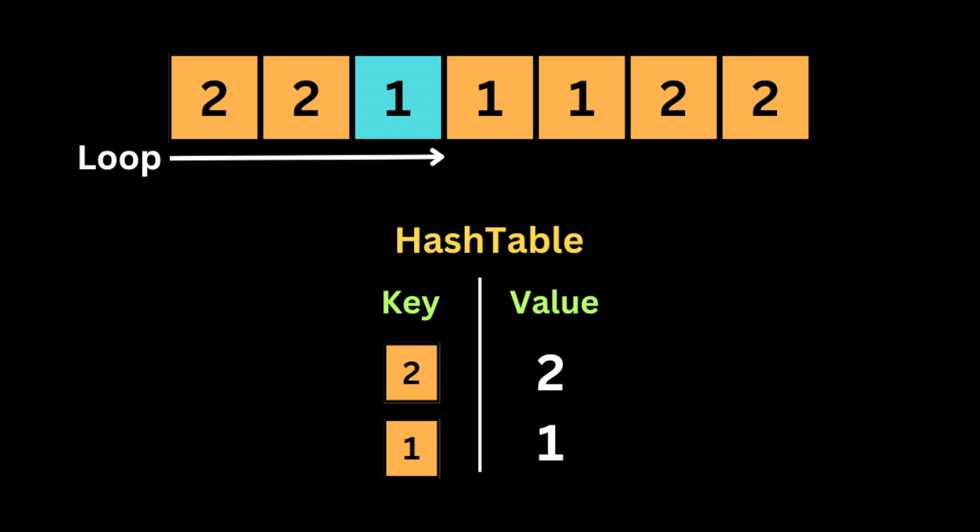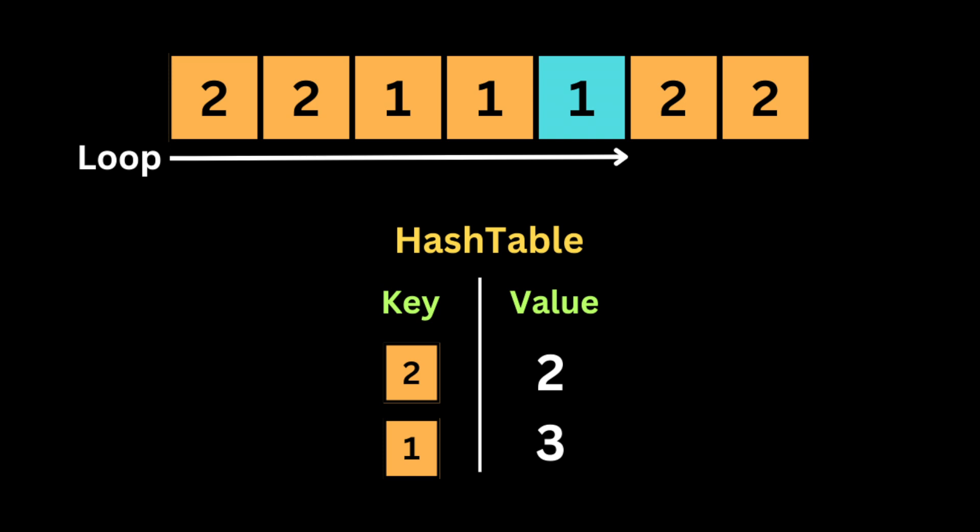We then encounter 1 for the first time, so we store it in the hash table with value 1. Skipping the next two 1s (same process), 1 ends up with a value of 3. For the remaining numbers, we increment the value of key 2 by 1 for each occurrence. At the end, the hash table has key 2 with value 4 and key 1 with value 3.